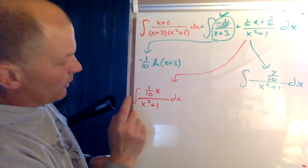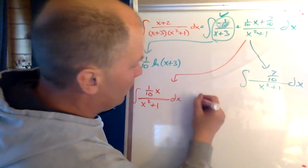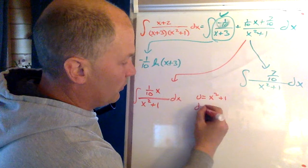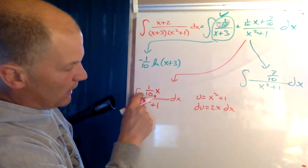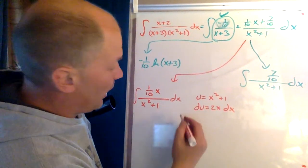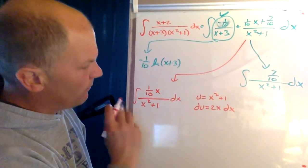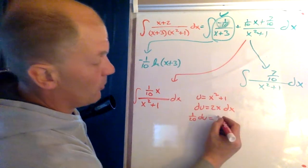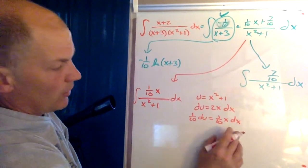This part we should use u substitution. So we go u equals x squared plus one. Therefore, du equals 2x dx. I need this 2x to actually be one tenth. So what number do I multiply by one tenth to give me two? That number is 20. So if I divide everything by 20, one twentieth du is going to be the same as two twentieths or one tenth x dx. That's perfect. So we have that.